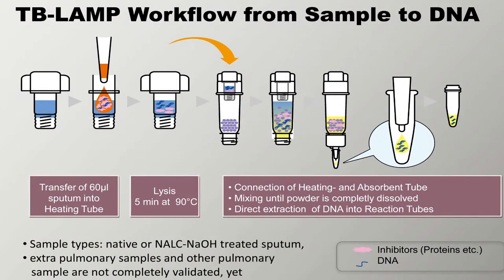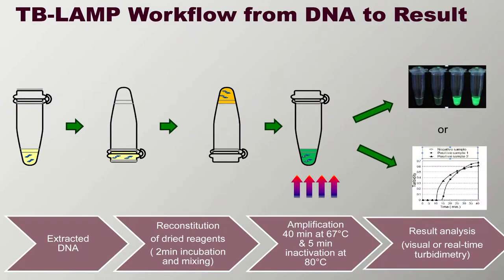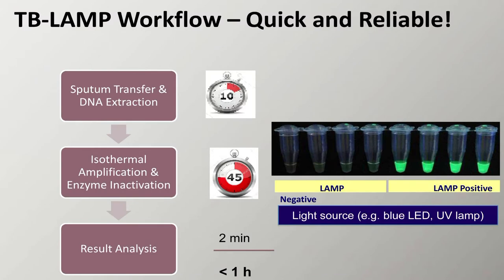TB LAMP is a molecular test recently recommended by the World Health Organization, which can potentially replace sputum smear microscopy. In short, LAMP stands for Loop Mediated Isothermal Reaction. It is a test where DNA is amplified at one single temperature, unlike a thermal cycler in PCR where there is temperature fluctuation. This is a simple instrument and very easy to perform — a robust confirmatory test for the diagnosis of pulmonary TB.